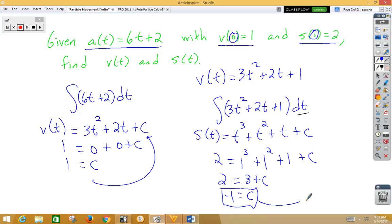If I take my negative 1 and I plug it back in, I get a final answer for s of t. So I have s of t is equal to t cubed plus t squared plus t minus 1. So there is my position function, and here is my velocity function.